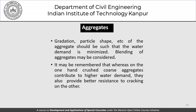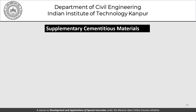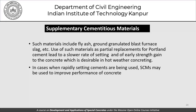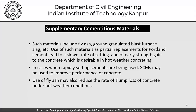Supplementary cementitious materials (SCMs) such as fly ash and ground granulated blast furnace slag, used as partial replacements for Portland cement, lead to a slower rate of setting and early strength gain, which is desirable in hot weather concreting. In hot weather we want heat liberation, rate of setting, and early strength gain to be lower during the initial period. When rapidly setting cements are used, SCMs may improve concrete performance. Use of fly ash may also reduce the rate of slump loss in hot weather conditions.